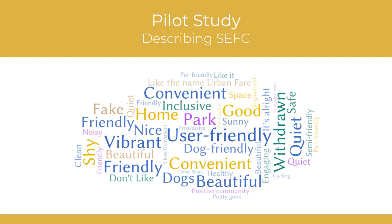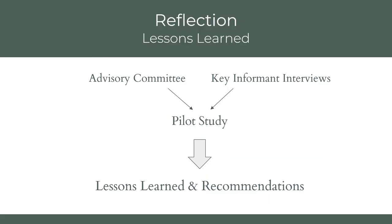We also asked participants how they would describe the Southeast False Creek neighborhood. Participants responded with feelings of high regard for the natural setting and location. However, some participants felt that the neighborhood was fake or that their building felt stigmatized. In gathering information from our advisory committee, key informants, and First Place residents, we have been able to identify lessons learned about conducting inclusive engagement and about the Southeast False Creek community.